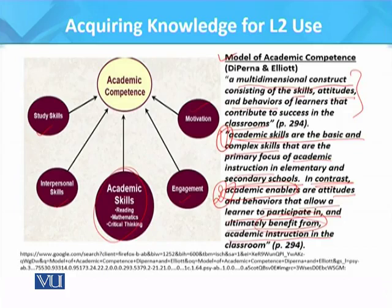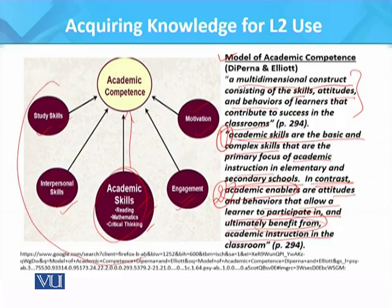Academic skills, as we can see, include reading, mathematics, and critical thinking skills. The enablers are study skills, interpersonal skills, motivation, and engagement. You can see that your academic skills, in order to form academic competence, are surrounded by the academic enablers.